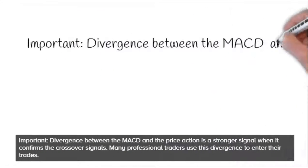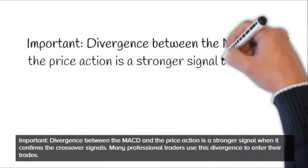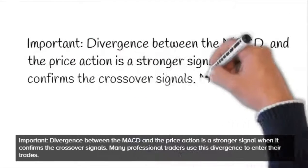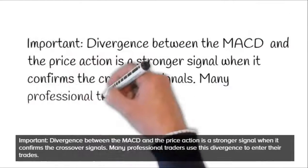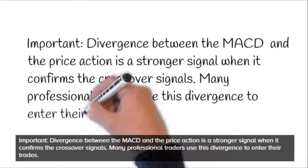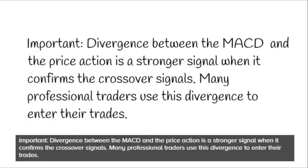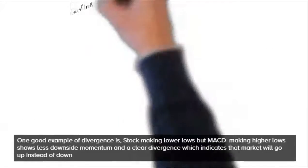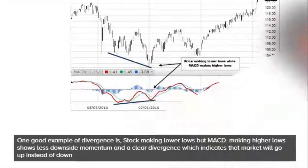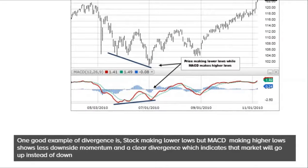Important: divergence between the MACD and the price action is a stronger signal when it confirms the crossover signals. Many professional traders use this divergence to enter their trades. One good example of divergence is a stock making lower lows but MACD making higher lows, which shows less downside momentum and a clear divergence indicating that the market will go up instead of down.